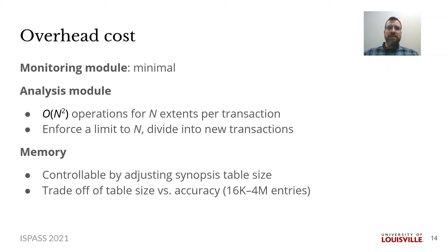The overhead cost of monitoring is minimal since BlockTrace only exposes block layer events. Extents are communicated efficiently with delimiters inserted to indicate transactions. The analysis module, however, has a quadratic complexity on the number of extents per transaction. In order to limit its running time and maintain stream processing, we enforce a limit on the number of extents per transaction. The memory overhead is controllable by adjusting the size of the synopsis table, which could be done statically or dynamically. In the paper, we evaluate the trade-off of table size and accuracy with real-world traces.